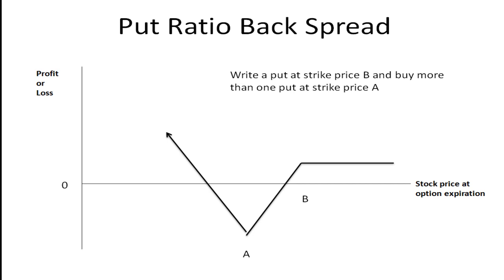The final strategy is the put ratio back spread. Here you write a put at an exercise price of B and buy more than one put at a strike price of A. You make your money if the price falls significantly, and you lose money if the price hovers around A. As drawn, if the price stays at or above B you make a small profit, but the real money is if the price falls significantly. This looks like roughly a two-to-one ratio, though it could be three to one or four to one. If it were one to one it would flatten out and you'd have a put bull spread.